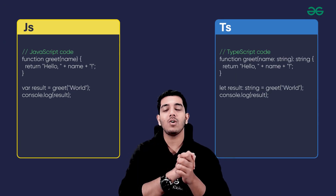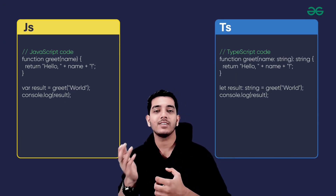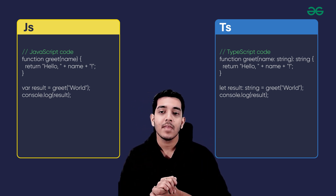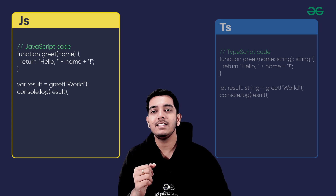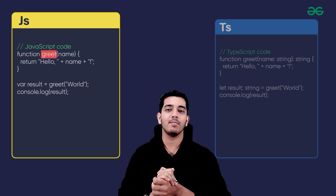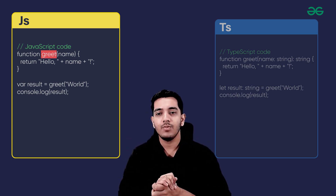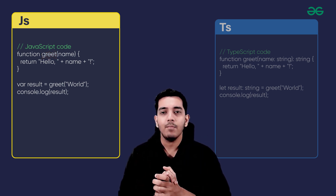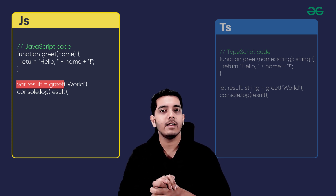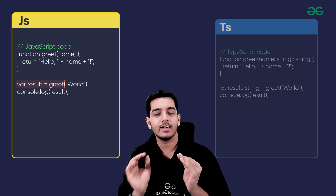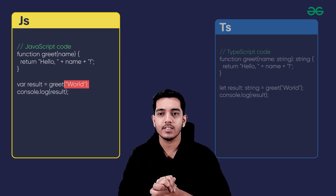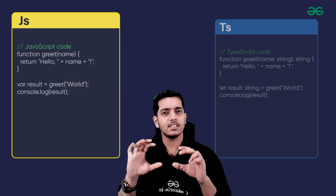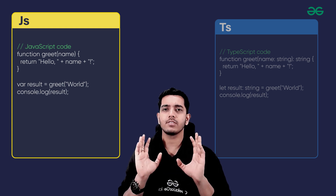On my screen, you can see on the left side I have the code for JavaScript and on the right side I have the code for TypeScript. In the JavaScript code, we basically have a function named 'greet' and inside this we are just providing parameters. It's returning a string, and below that we have a variable 'result' which equals greet called with 'world', and it's printing that result — meaning it's going to print 'Hello World'. This is a simple JavaScript function.